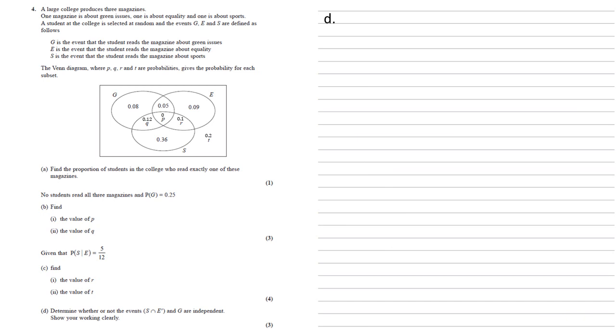For part D, we need to determine whether or not the events S intersect E dash and G are independent and show our working clearly. So let's start out with finding the probability of S intersect E dash. So that is the bit where S meets not in E. So on our diagram, it's just this part in the red oval here. They're the only bits which are both in S but not in E.